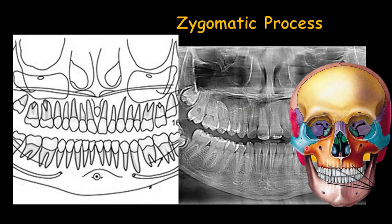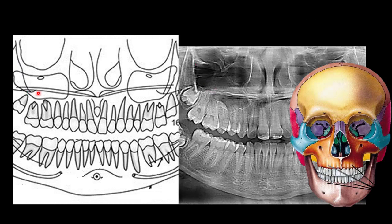The zygomatic process of the maxillary bone sutures with the zygomatic bone and is superimposed on the maxillary sinus as a U-shaped cortical bone, which you can sometimes detect in a panoramic radiograph. The orbital wall is at the top of the maxillary sinus, and the inferior wall of the orbit is intact with the superior wall of the maxillary sinus. It's very important to detect that cortical bone and confirm it is intact, because in fractures this inferior orbital wall can be fractured and some parts of it can go inside the maxillary sinus.